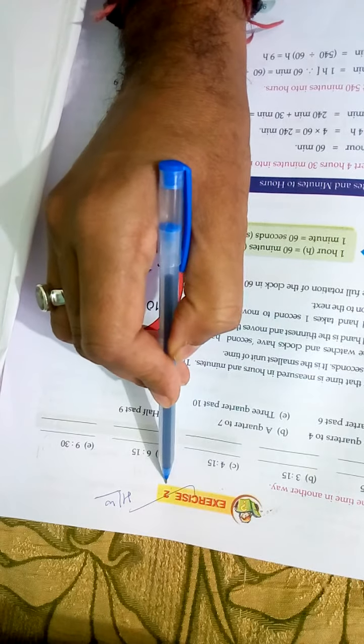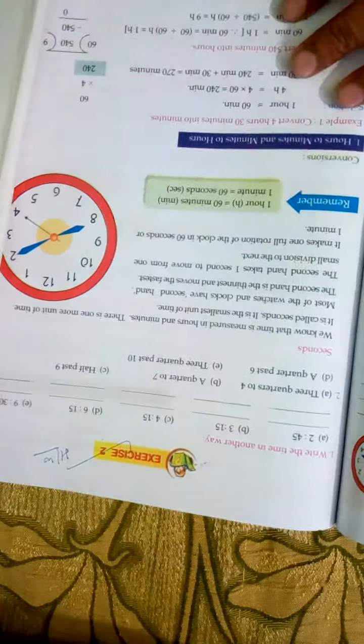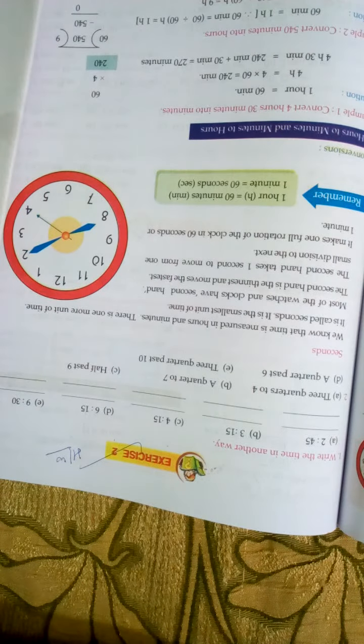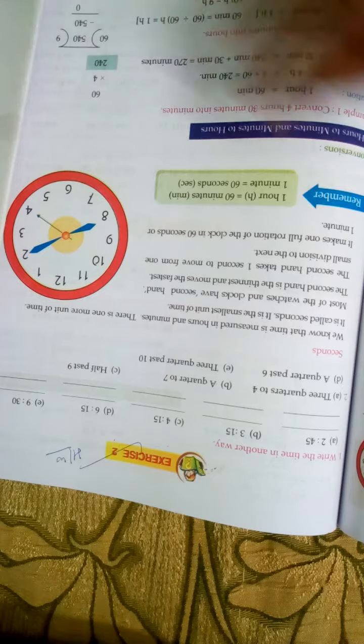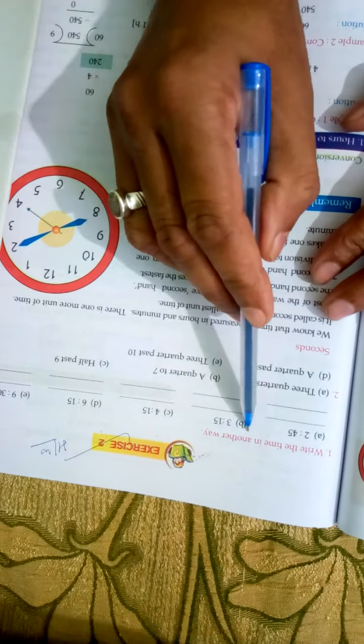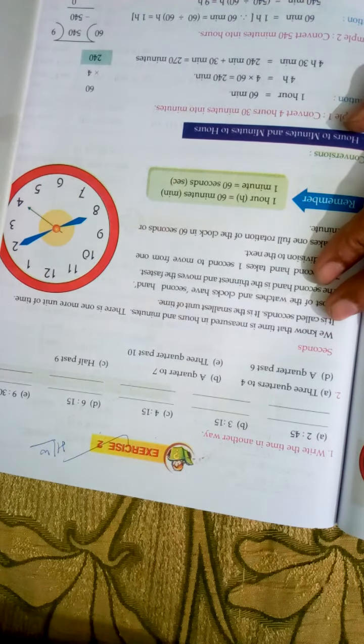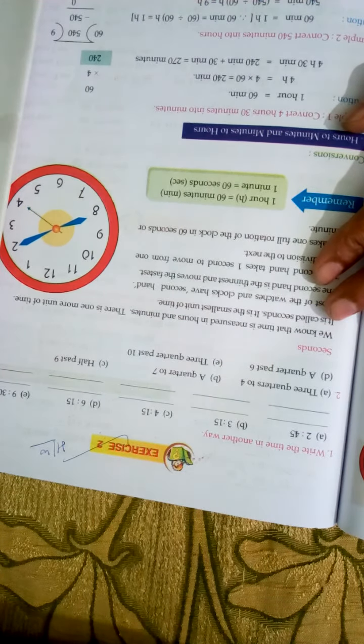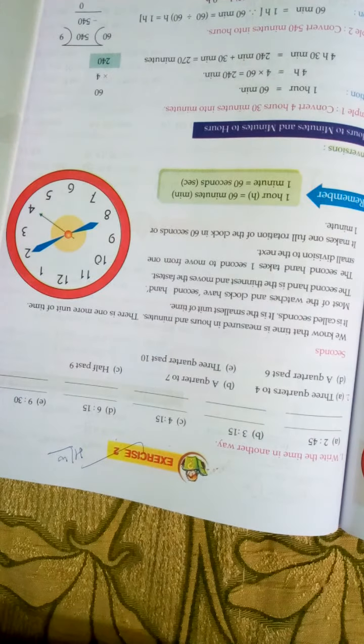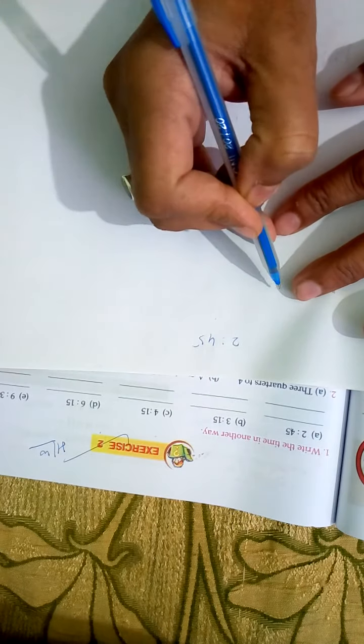Do it in your copy. Here is given, write the time in the other way. You have given 2:45. How to do 2:45? That means you write...